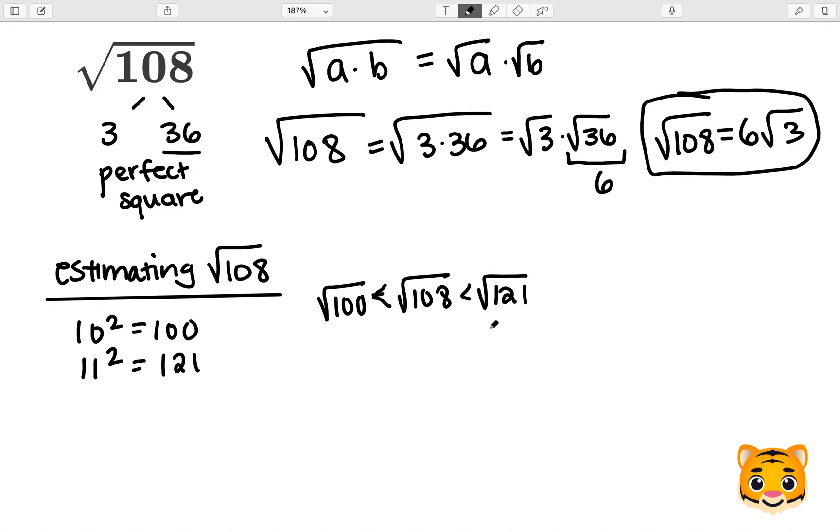Because 10 squared equals 100, we can rewrite the square root of 100 as 10. And we can also rewrite the square root of 121 as 11, because 11 squared equals 121. Now we can see that the square root of 108 is between 10 and 11.